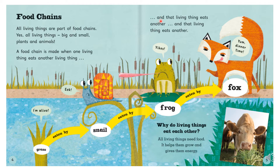A food chain is made up when one living thing eats another living thing, and that living thing eats another, and that living thing eats another. Why do living things eat each other? All living things need food — it helps them grow and gives them energy.